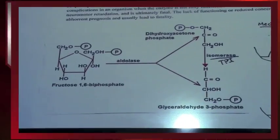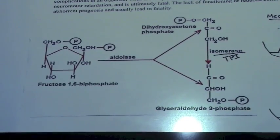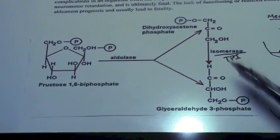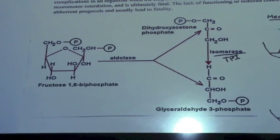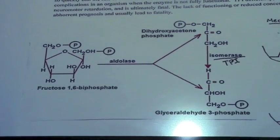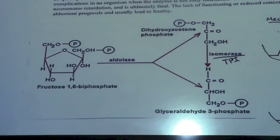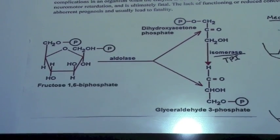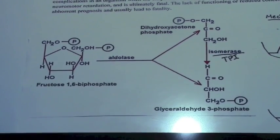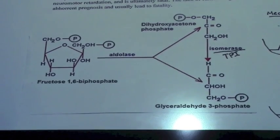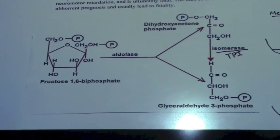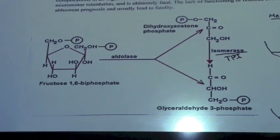Can anybody tell me the difference between our DHAP and our G3P? Anyone at all? Yes, young man in the front please. It's an aldehyde, not a ketone. Very, very nice. So we have our aldehyde, which characterizes our G3P in order to be turned into pyruvate.